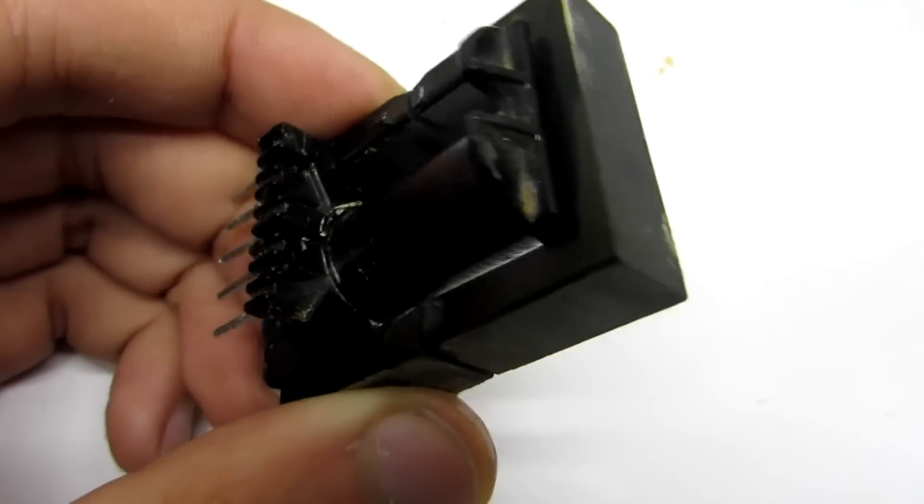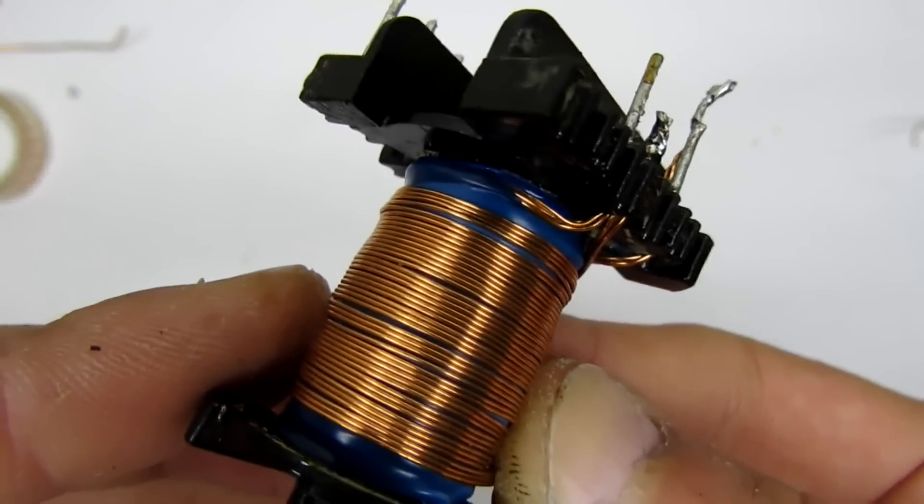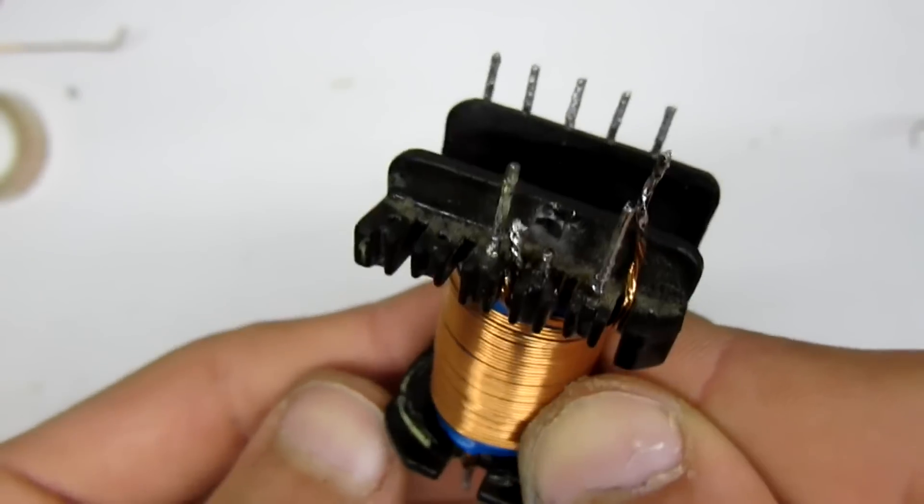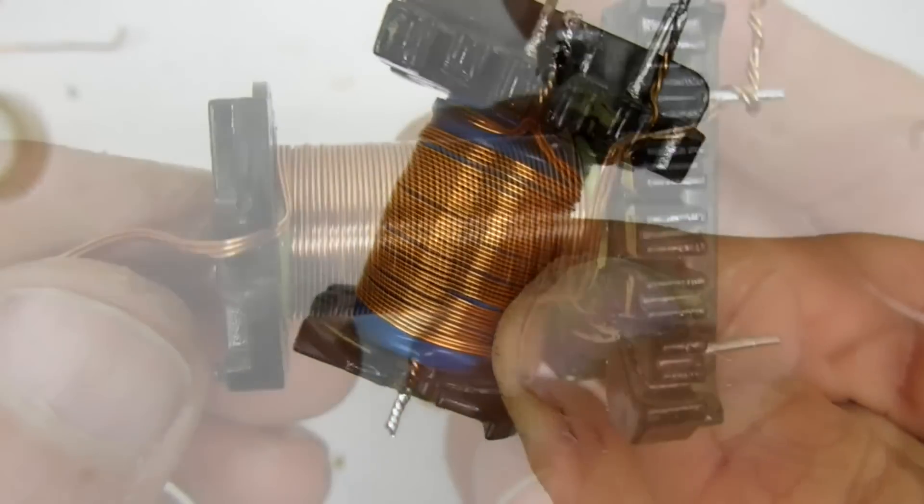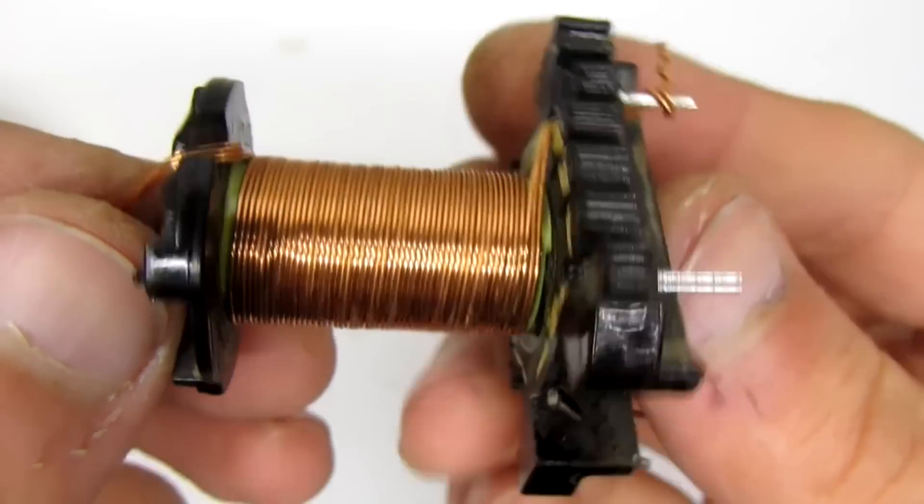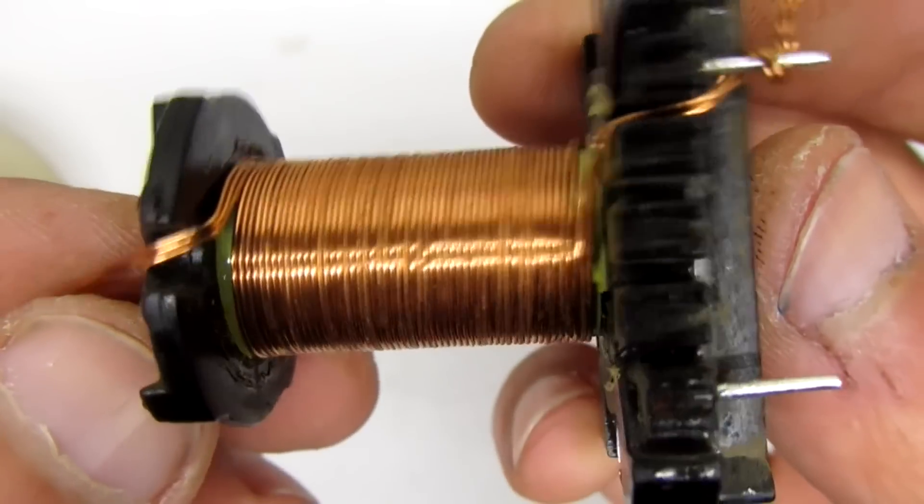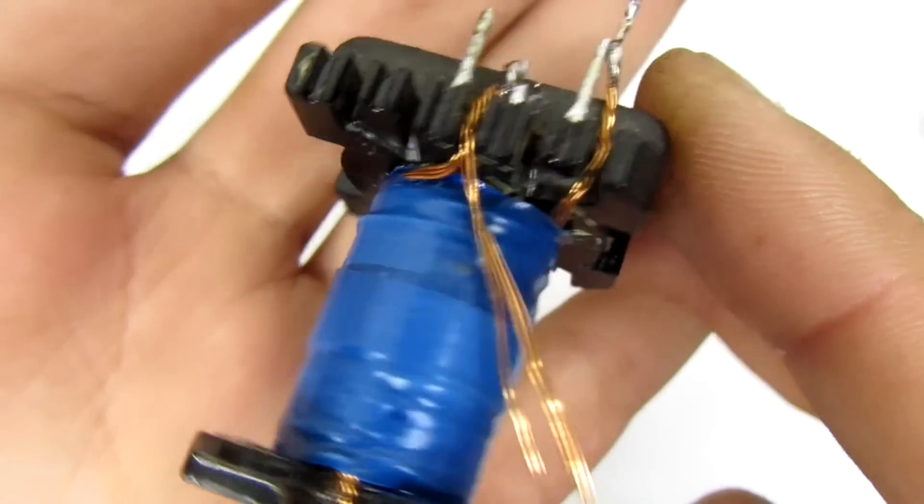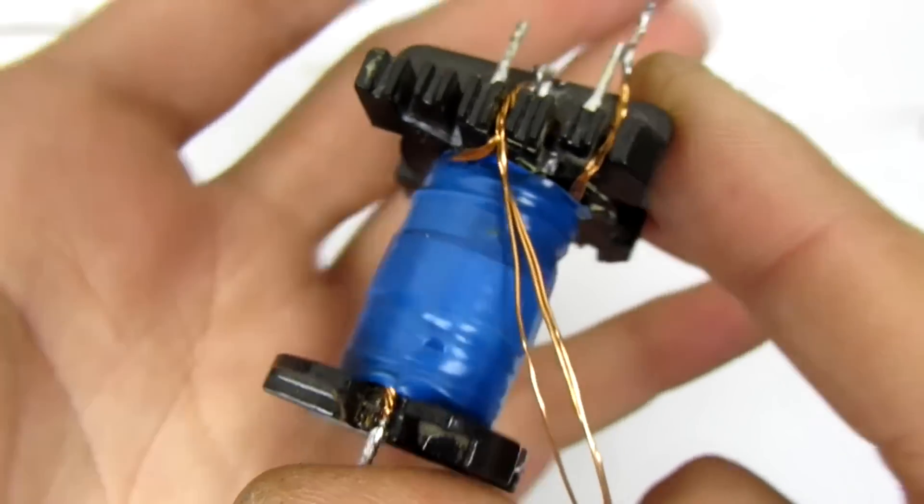It was fully disassembled and winded again. Primary winding made with triple 0.5 millimeter wire. Total number of turns is 55. It fits into three layers. They isolated with blue insulation tape. Winding should be neat and tight.